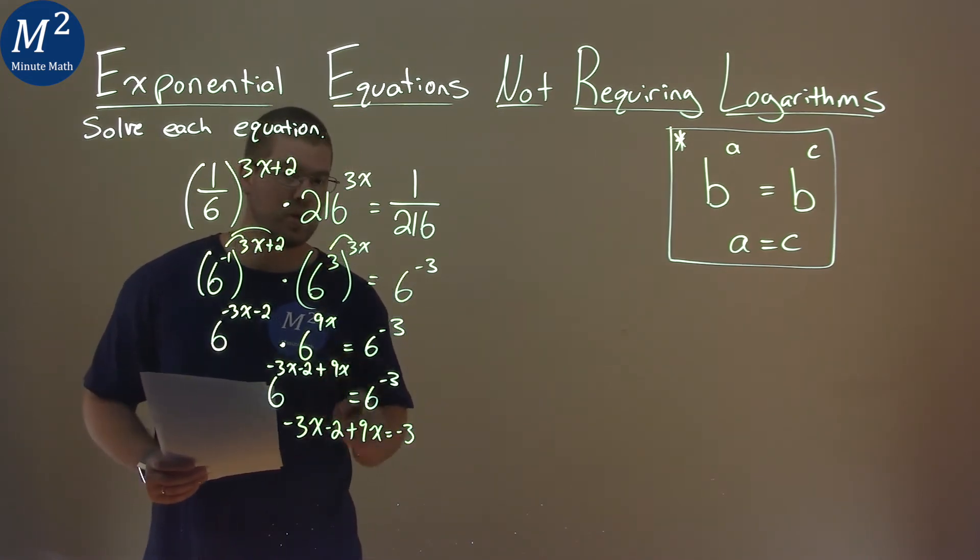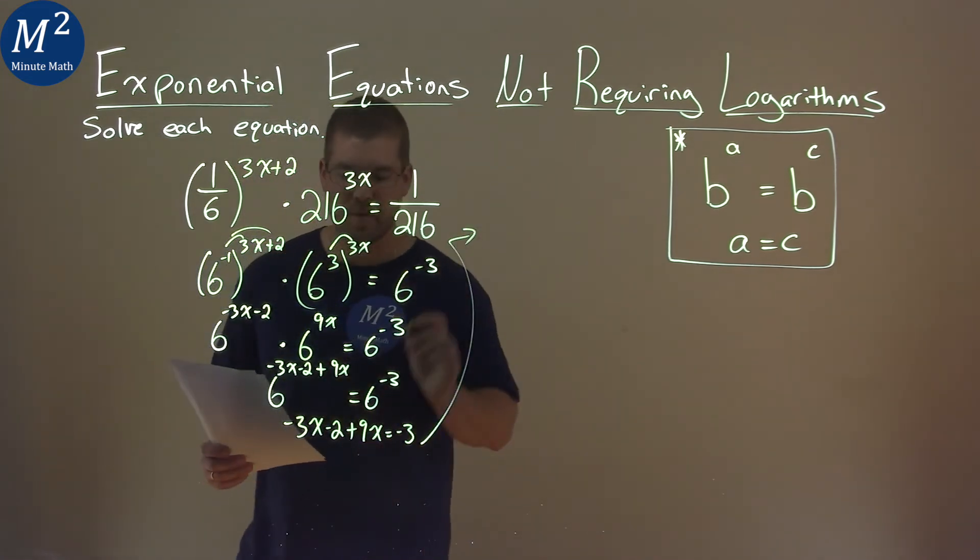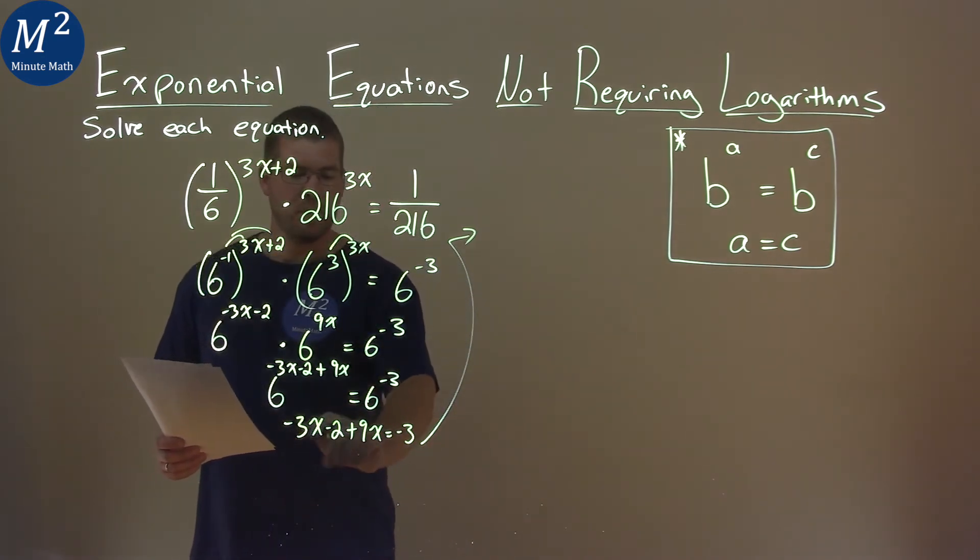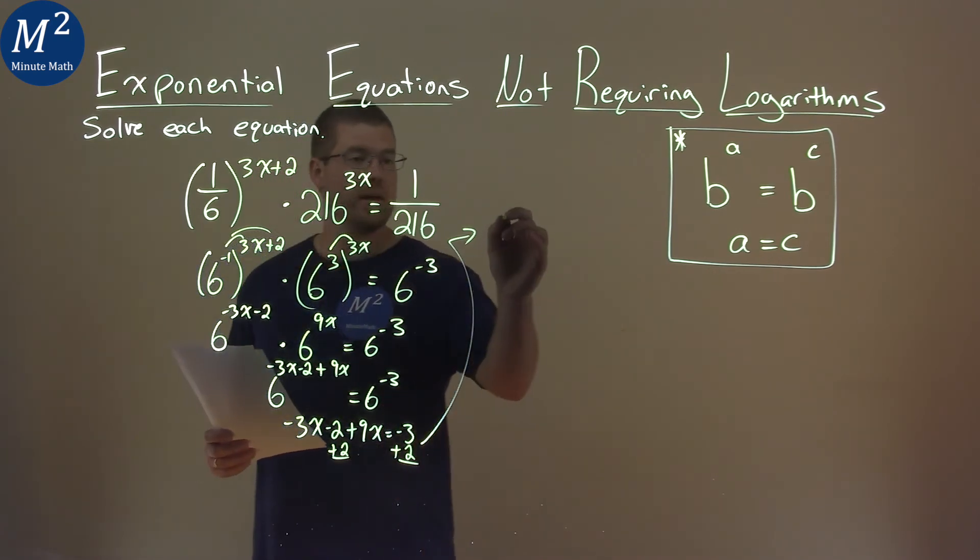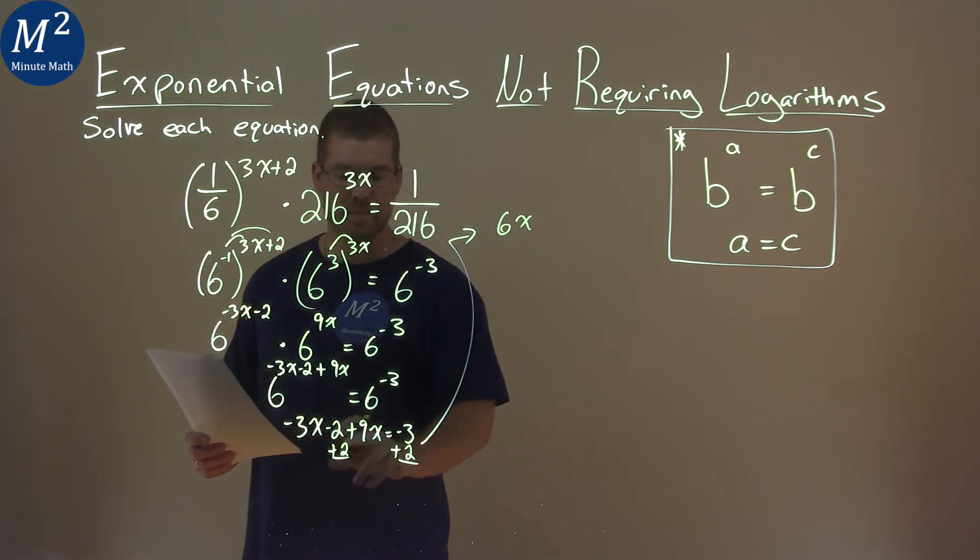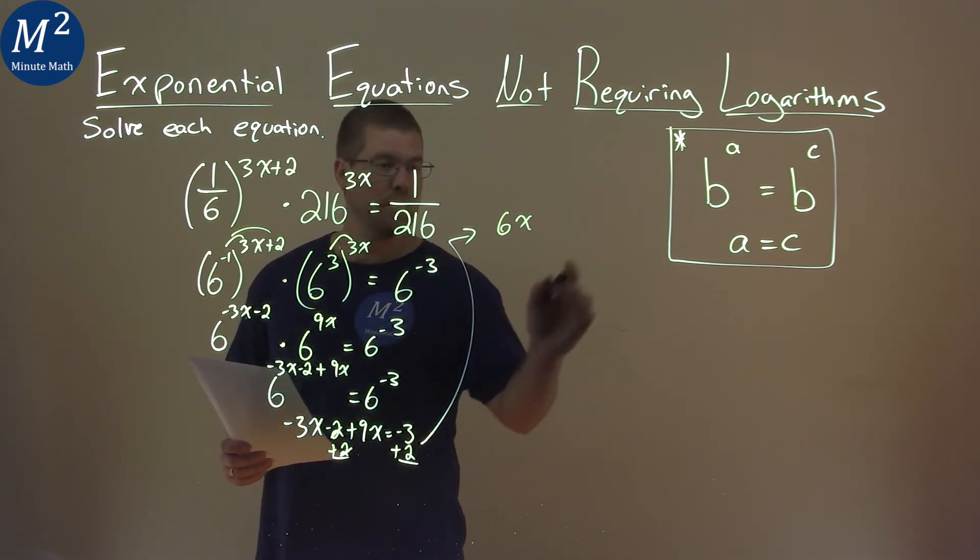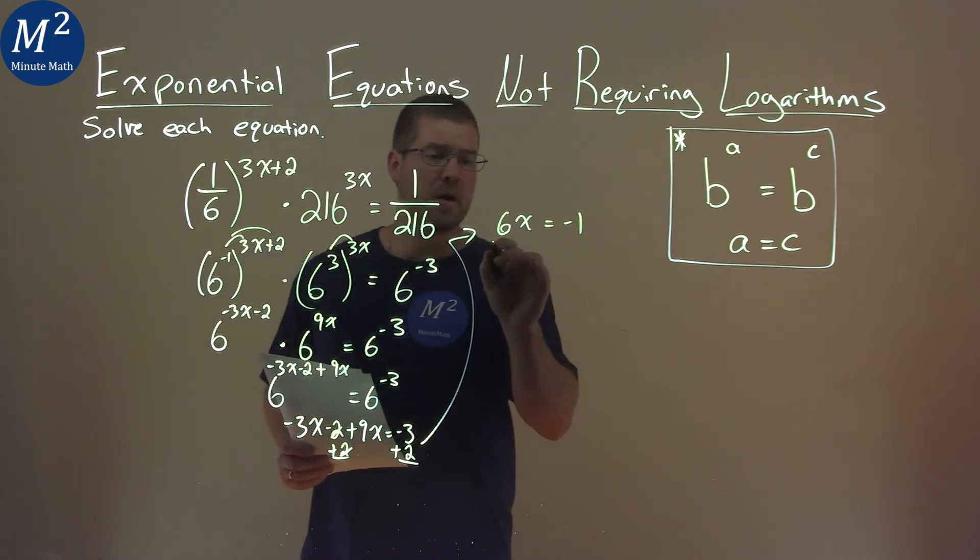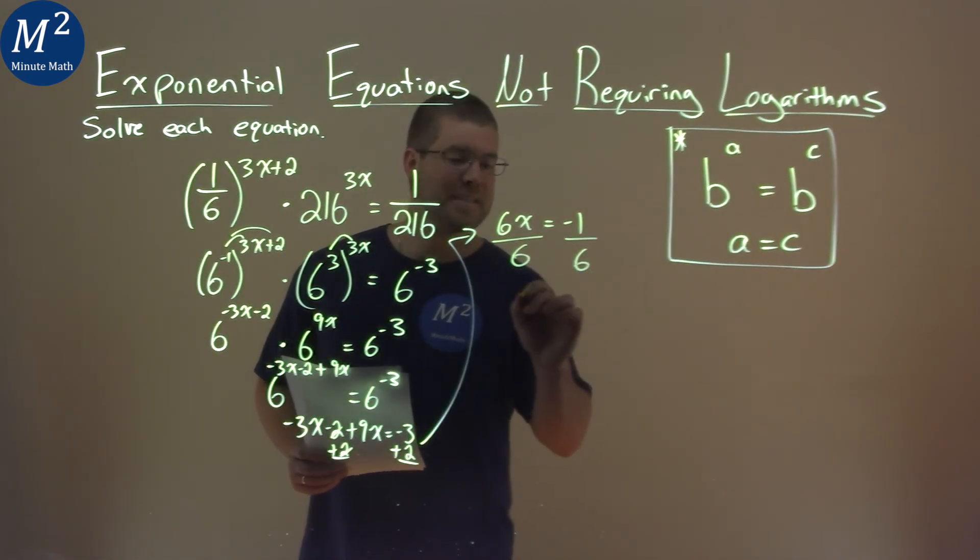And from here, we can solve for x. Let's do that up here. Negative 3x plus 9x is 6x right here. Add a 2 to both sides. That cancels. Negative 3 plus 2 is negative 1. Keep on going. Divide both sides by 6, and x equals negative 1 over 6.